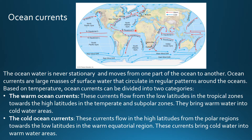Examples of warm ocean currents include the Gulf Stream, the North Atlantic Drift, the Brazilian Current, the Agulhas Current, the Kuroshio Current, and the East Australian Current. All these currents are flowing from the low latitudes towards the higher latitudes.